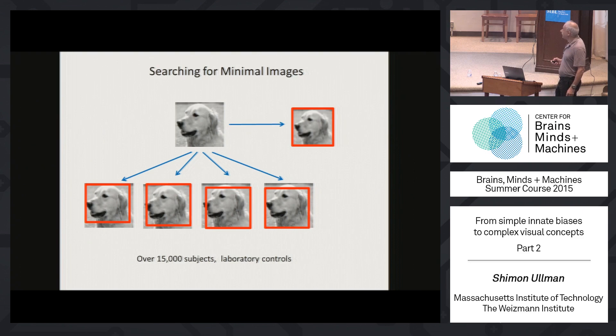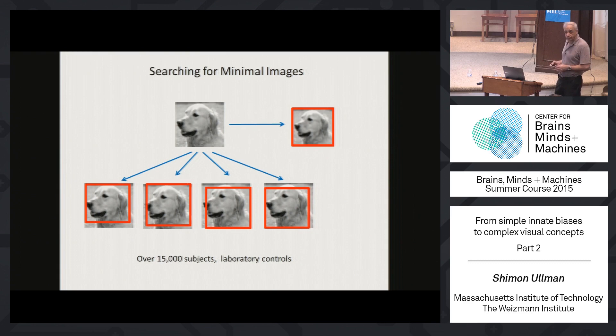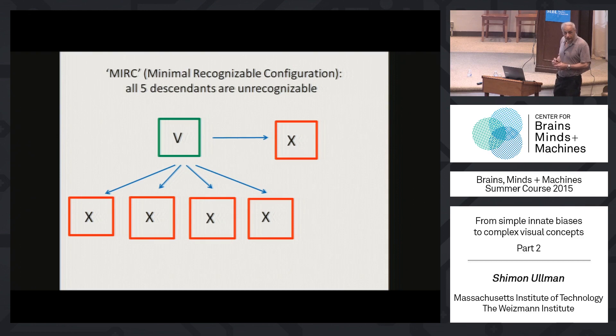This is challenging psychophysically in terms of number of subjects, because you can use a subject only once. If you show a subject a reduced image after they saw the parent, they will recognize based on their previous exposure. So you show the other images to new subjects. This requires a large number of subjects — 15,000 subjects participated online via Mechanical Turk, along with laboratory controls. We define the minimal image for recognition at a 50% recognition criterion.